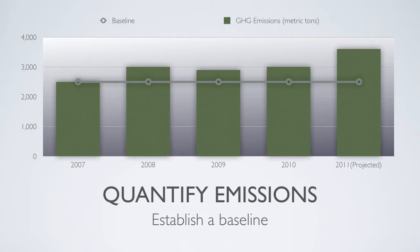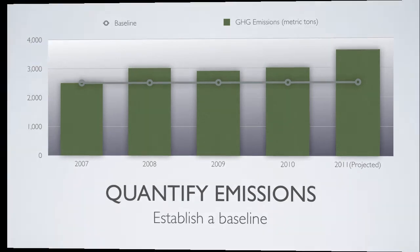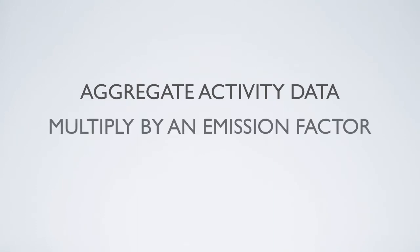There are three basic steps in any greenhouse gas calculation: 1. Aggregate activity data. 2. Multiply by an emission factor. 3. Convert to desired units.